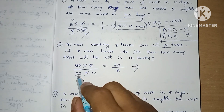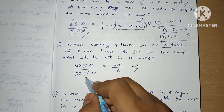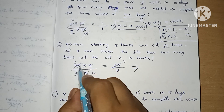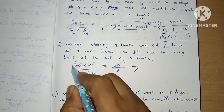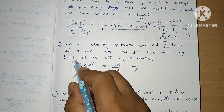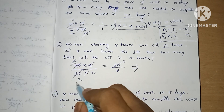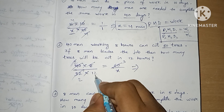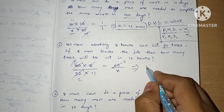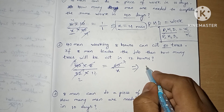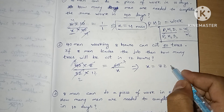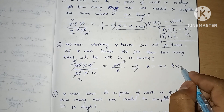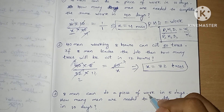Let's see the calculation. After simplifying, we get 72. So X value will be 72 trees. This is the answer.